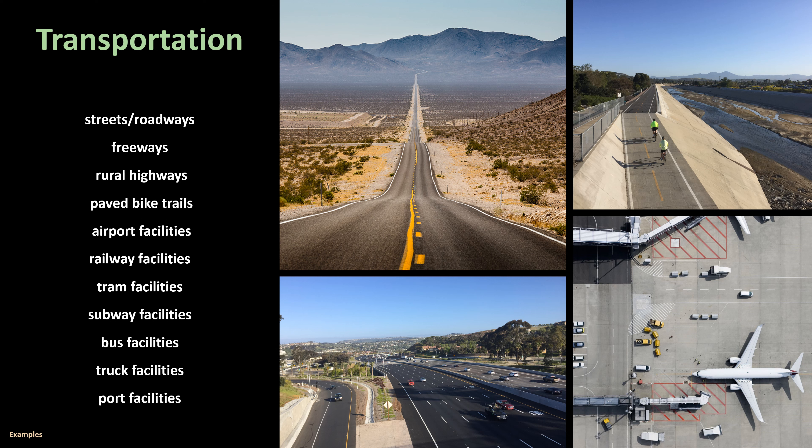There are several different types of land use categories for developed land, which I will go over on the next several slides. The first is transportation. Examples include streets and roadways, freeways, rural highways, paved bike trails, and airport, railway, tram, subway, bus, truck, and port facilities.